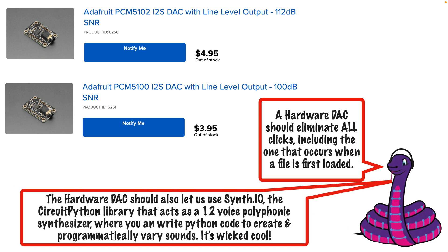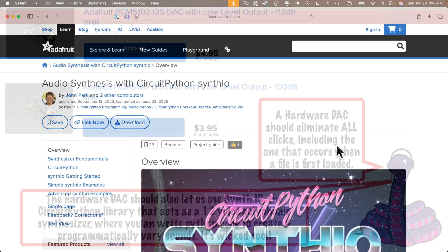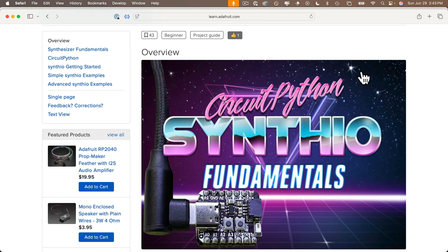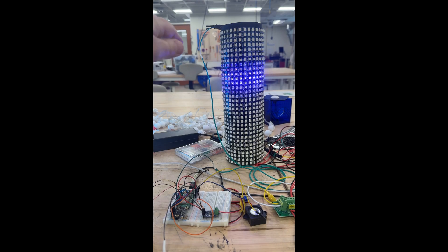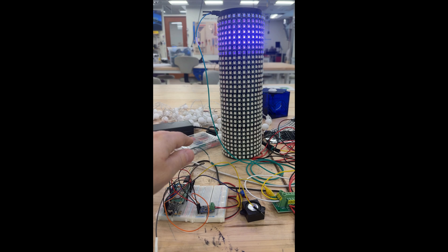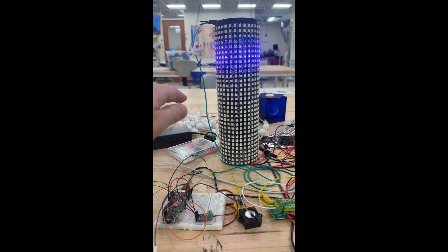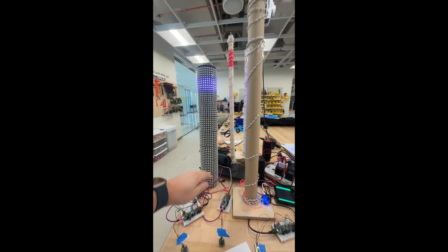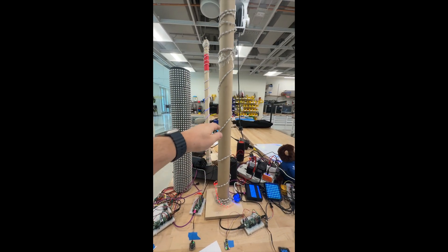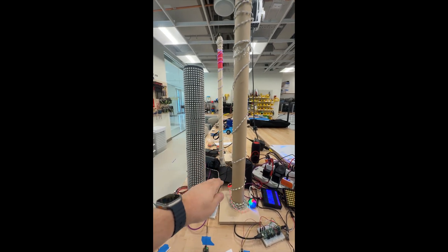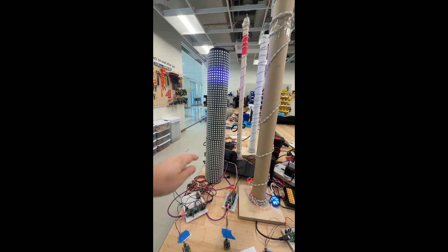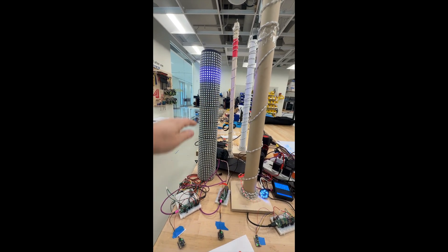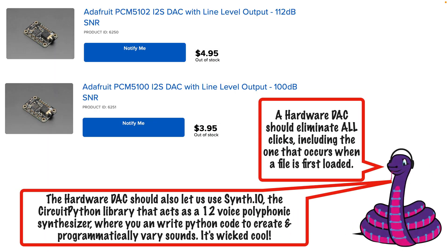Another issue with the Picos: standard Pico PWM audio doesn't allow you to take full advantage of the CircuitPython SynthIO library, which lets you create cool mathematically generated electronic sounds — like the ones I use in the sonic pillar sculptures that vary sound based on how close you are to a pillar. But you need a DAC to take advantage of this. So by adding an inexpensive hardware DAC, we can both get rid of the clicks during file play and enable SynthIO.